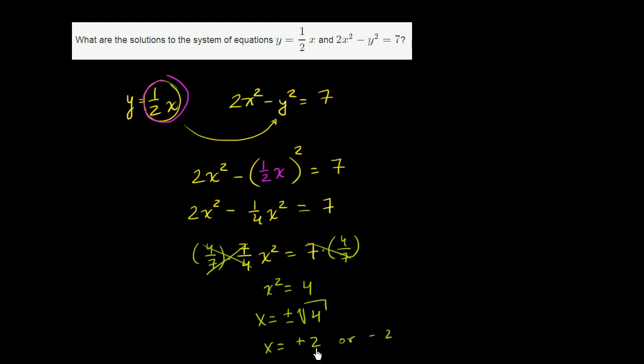Now, given that x is positive 2 or negative 2, let's substitute back into either of these equations to figure out what y is, what the corresponding y is for each of these. So if x is 2, y is going to be 1 half of that, it's going to be 1. So we have the point 2 comma 1. 1 half times 2 is 1.